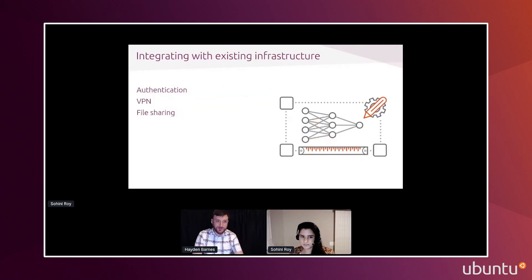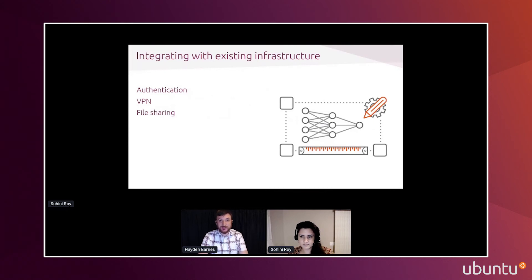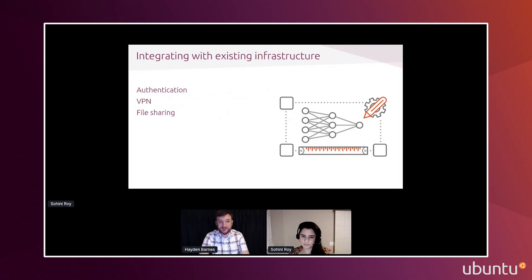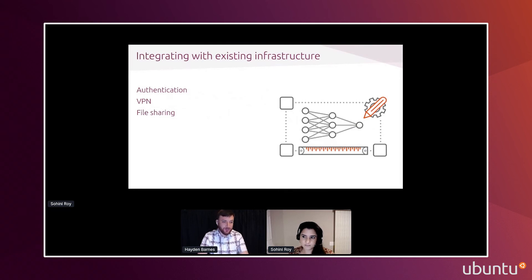In terms of integrating with existing infrastructure — often Microsoft, sometimes Linux, and increasingly both — for authentication we're most often authenticating against Active Directory, sometimes LDAP, and in other cases an LDAP-Active Directory bridge. Many enterprises also use a VPN that requires tweaking WSL networking. And then there's the challenge of accessing network file shares in the WSL environment, which requires customization for enterprise clients.